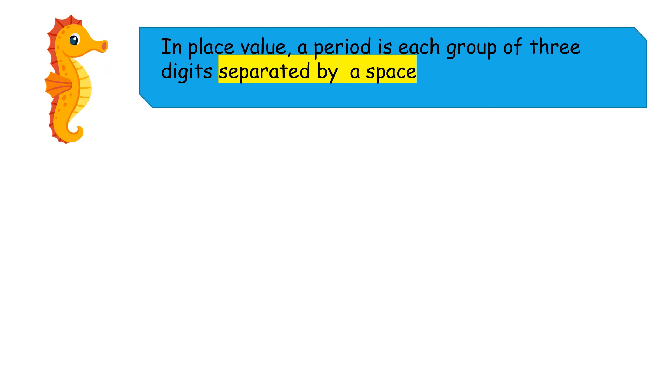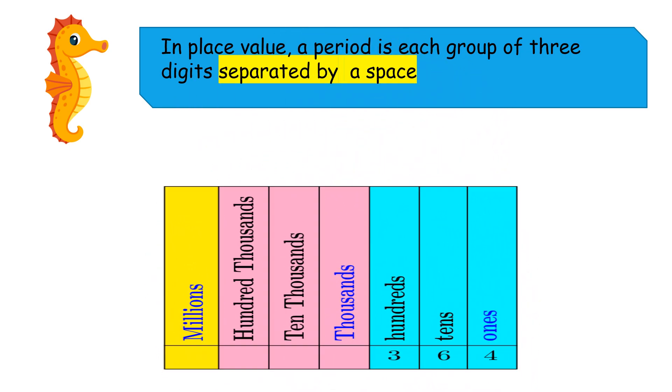In place value, a period is each group of three digits separated by a space. Let's look at our place value chart once more. Ones, tens, hundreds are in the units of ones period.